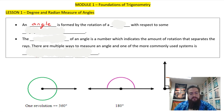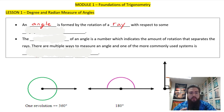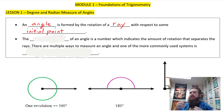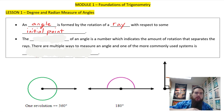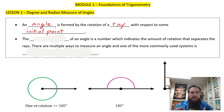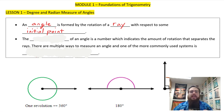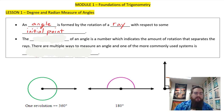An angle is formed by the rotation of a ray with respect to some initial point. We are taking a ray — something that has a point and goes in a certain direction — and rotating it either clockwise or counterclockwise. An angle measure is simply the space in between what happens when you rotate an object some amount.